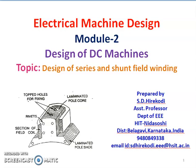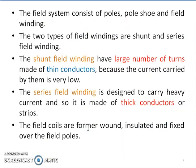In the previous lecture we discussed the design of the field system, covering how to decide the area of the pole as well as the yoke section. Now let us discuss the design of series and shunt field windings. This is also part of the field system. The field system consists of poles and field winding, and usually two types of windings are used: shunt field winding and series field winding.